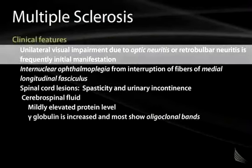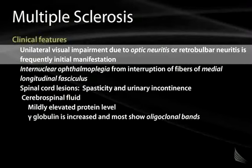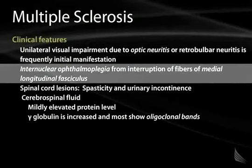The clinical features include unilateral visual impairment due to optic neuritis or retrobulbar neuritis, which is frequently the initial manifestation. The patient will have a painful eye with decreased vision. You may also see internuclear ophthalmoplegia from interruption of fibers in the medial longitudinal fasciculus.